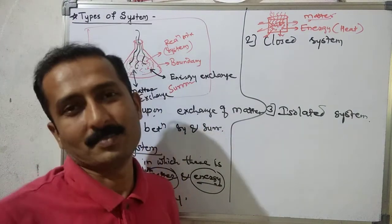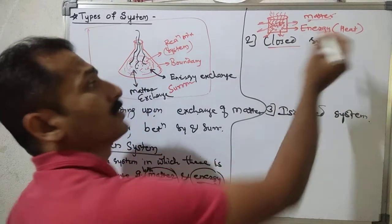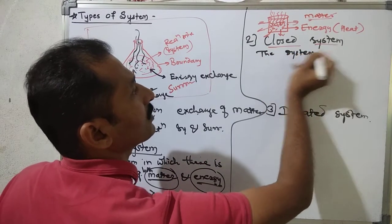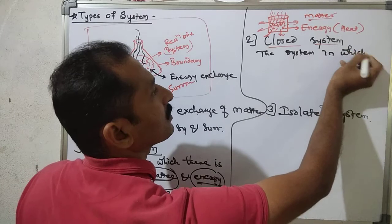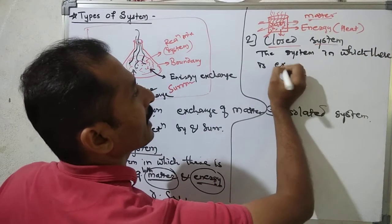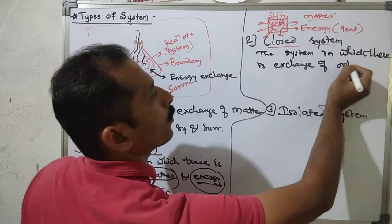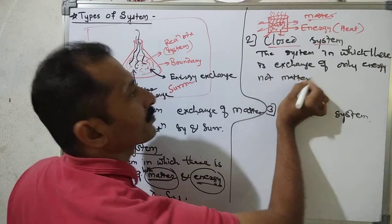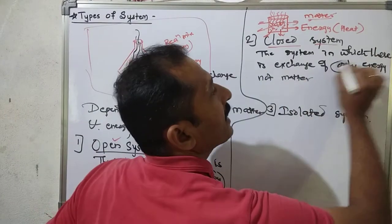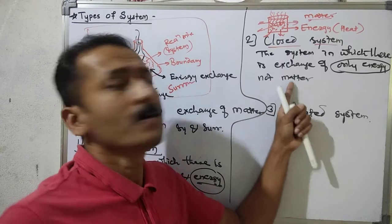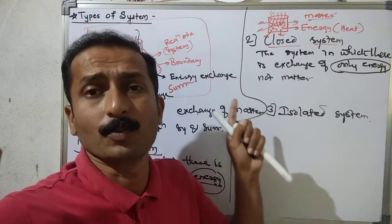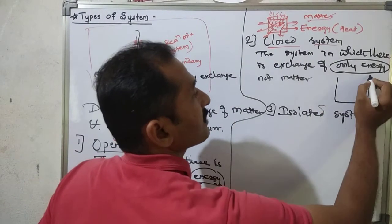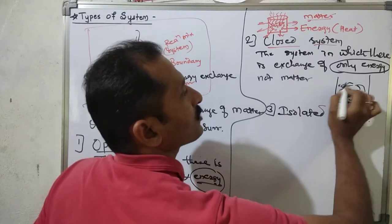The next one is the closed system. In a closed system, there is exchange of only energy and not matter. The system where there is exchange of only energy but not matter is a closed system. An example is hot water kept in a closed container.